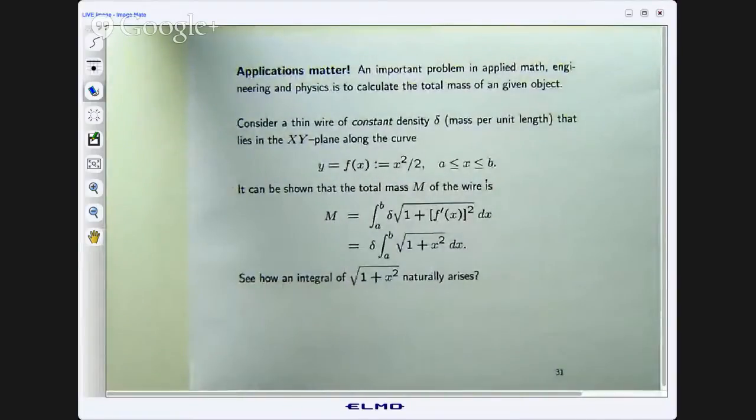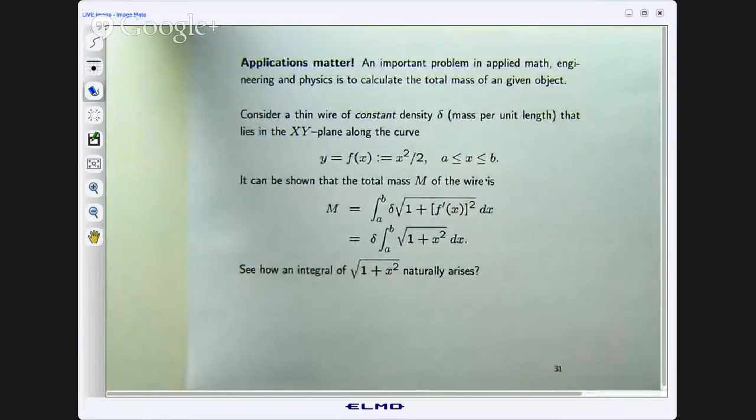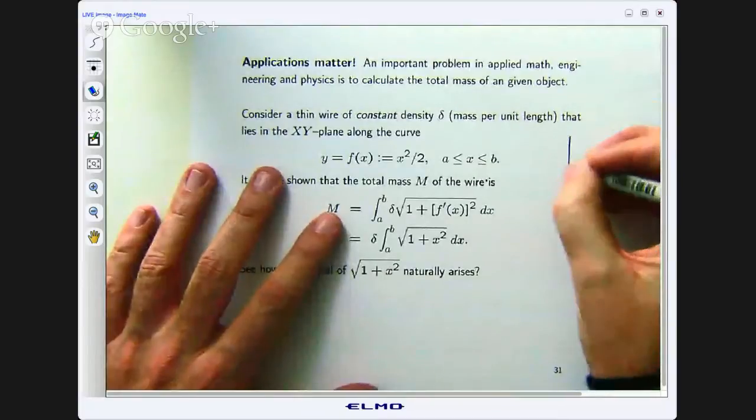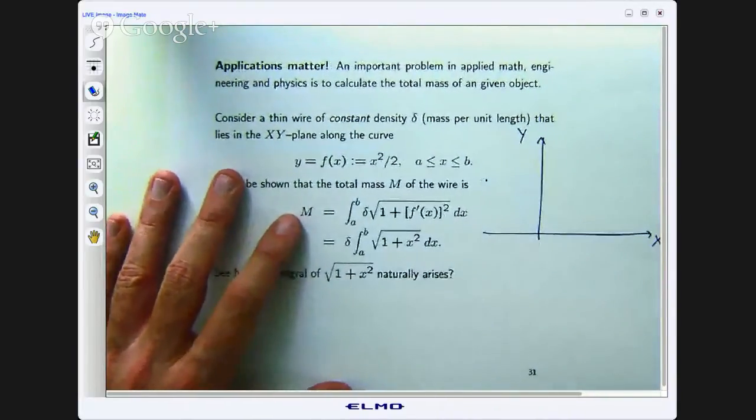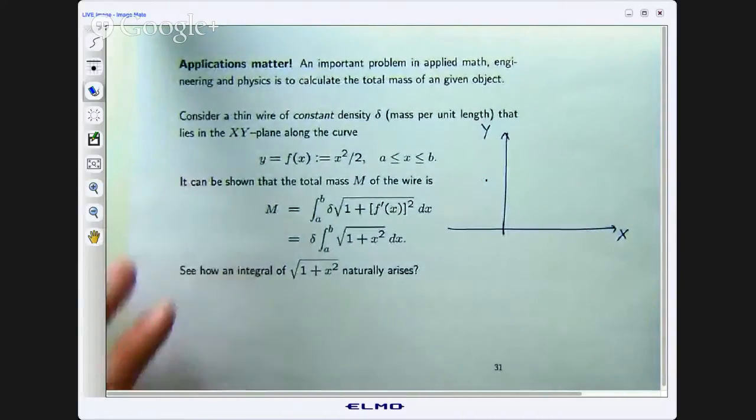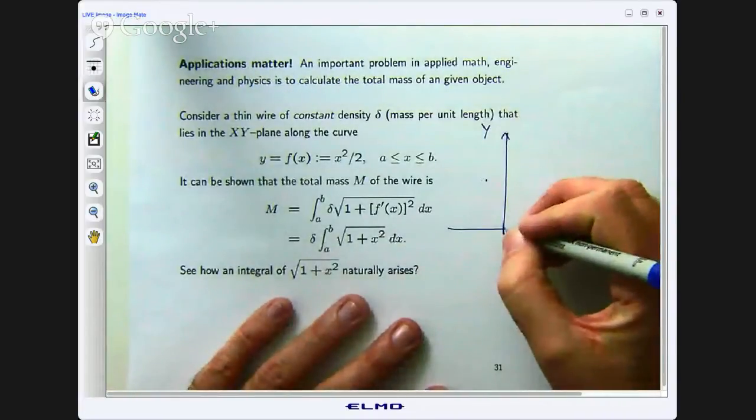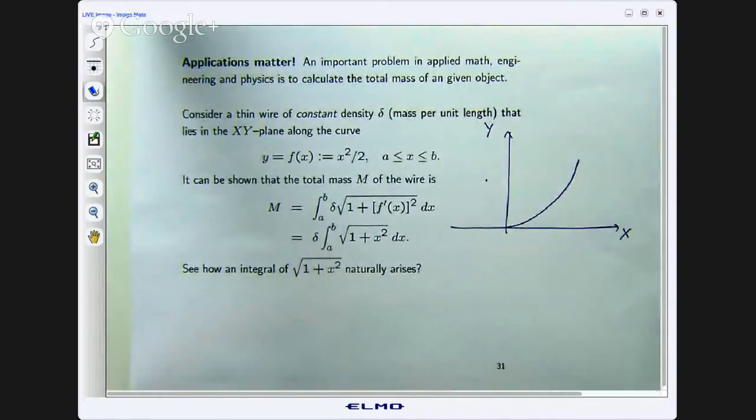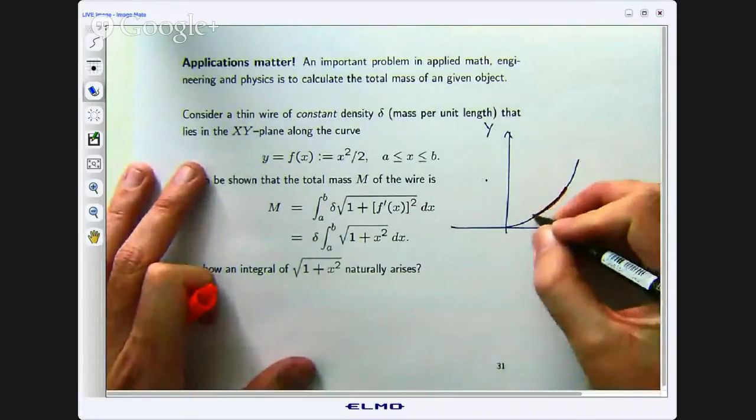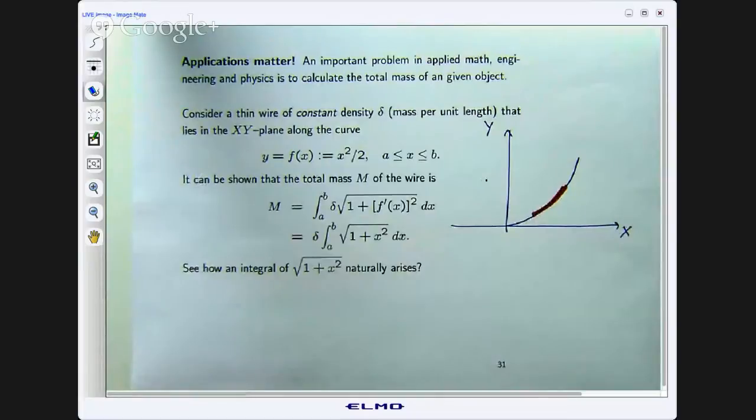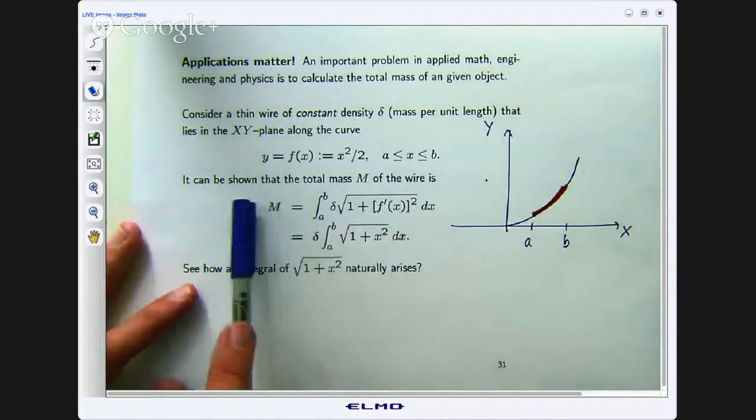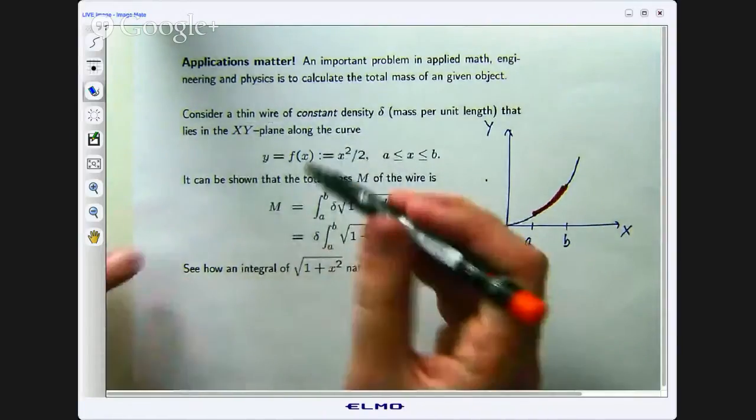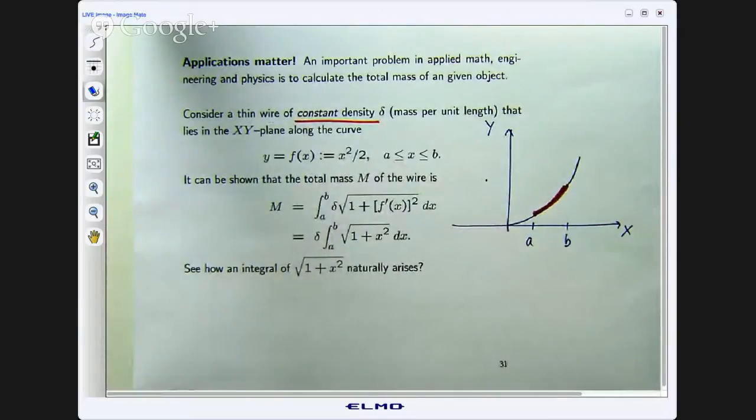Okay so we will come back to that in a minute. Let me actually show you an example. Applications matter yes they do. So suppose we have a wire and the wire sits in say the xy plane and it lies along the curve say y equals x squared on 2. And it is between x equals a and x equals b. So this little orange piece is going to be the piece of our wire that we are interested in.